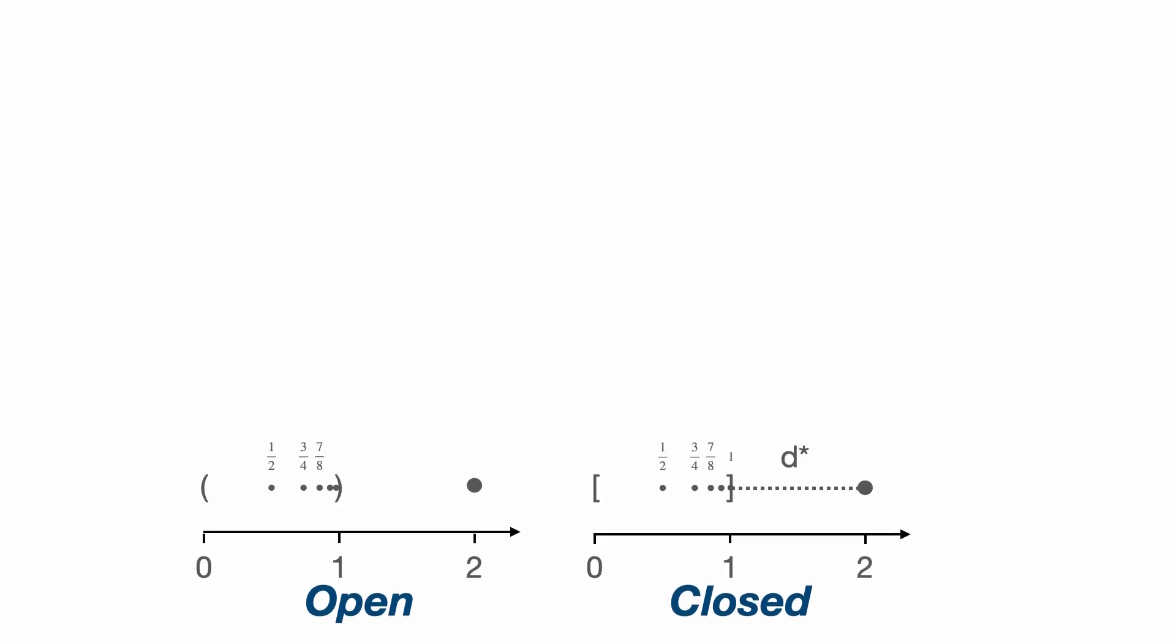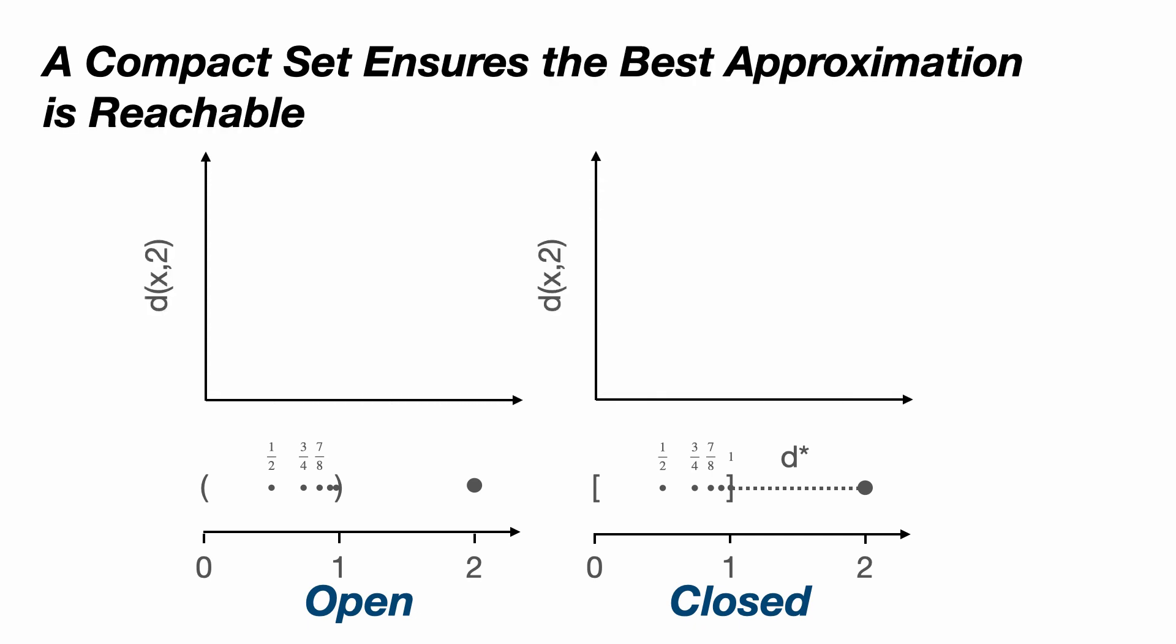So taking the distance function as a function of x in our open and closed intervals, if we plot the distance between x and 2, we can draw a line to our minimum distance d star, which has a value of 1 and occurs when x is equal to 1. In the open case, although the distance function approaches the minimum distance d star, it never actually reaches it. On the other hand, the distance function on the closed and compact set actually reaches the minimum distance d star.